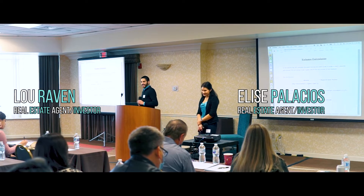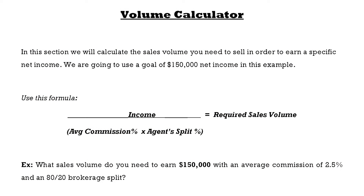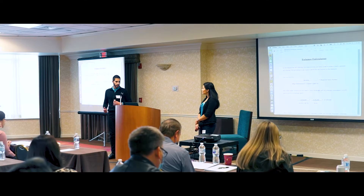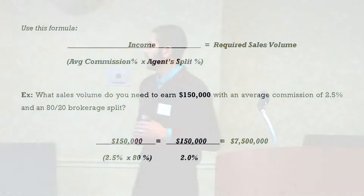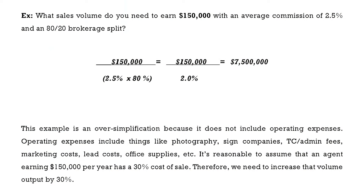The volume calculator figures out the required sales volume to hit your income goal. Using an example of $150,000, we assume an 80/20 brokerage split and a 2.5% average commission. At the bottom of the equation, we multiply the 2.5% average commission by the 80% that's the part of your brokerage split that you keep — that comes out to 2%.